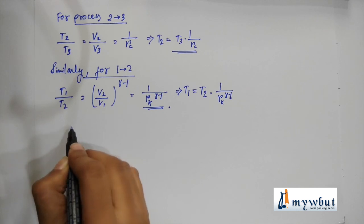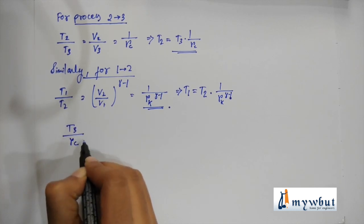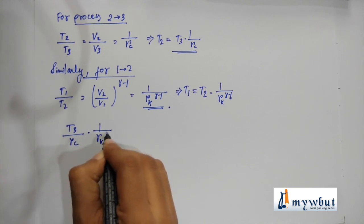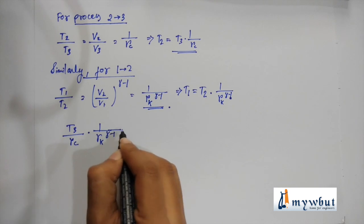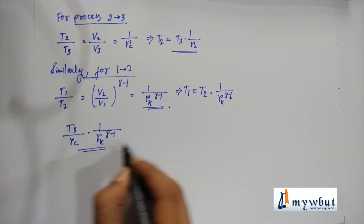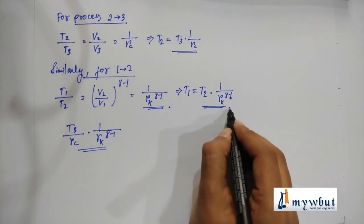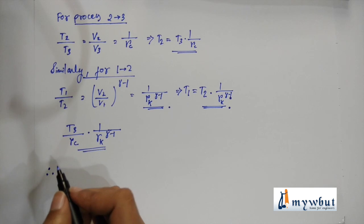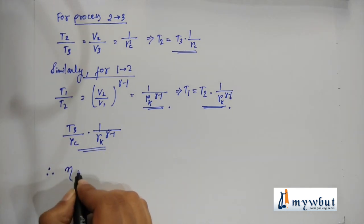Now T1 equals T3/RC times 1/(RK^(gamma-1)). After getting all the values and putting it in the equation for efficiency, we can define eta as 1 minus [T3*RC^(gamma-1)/RK^(gamma-1) - T3/(RC*RK^(gamma-1))].